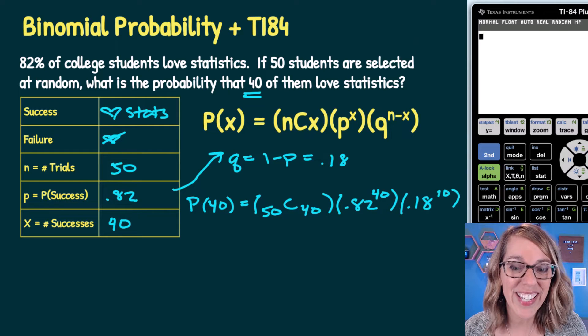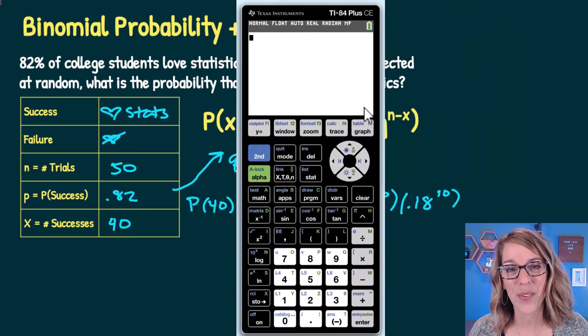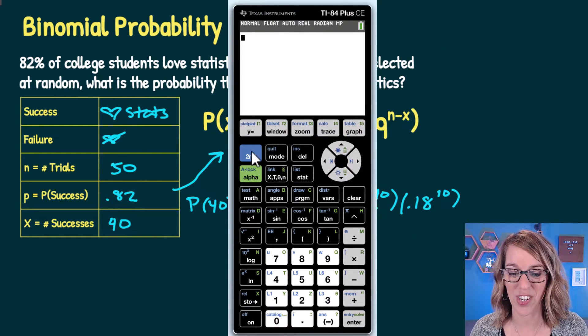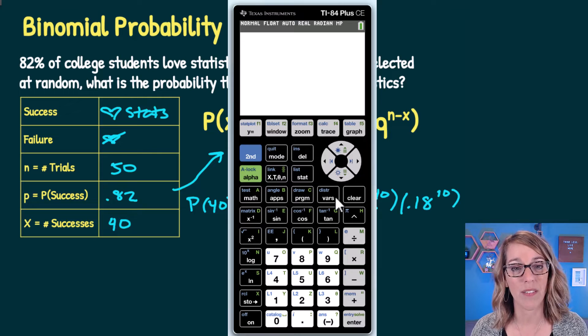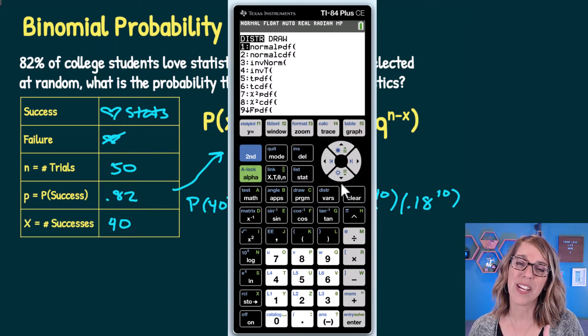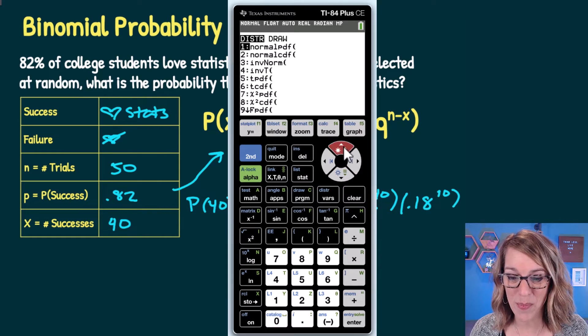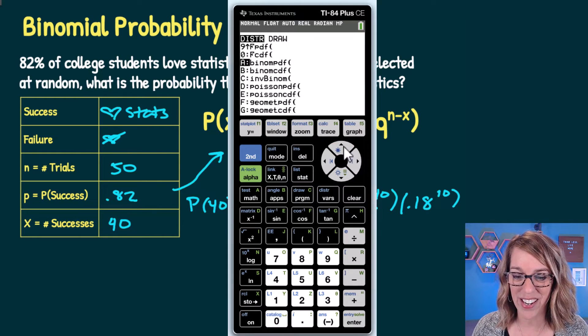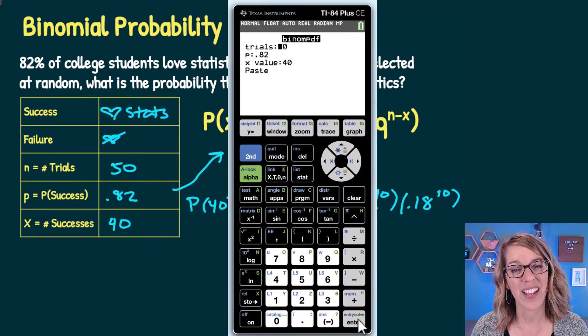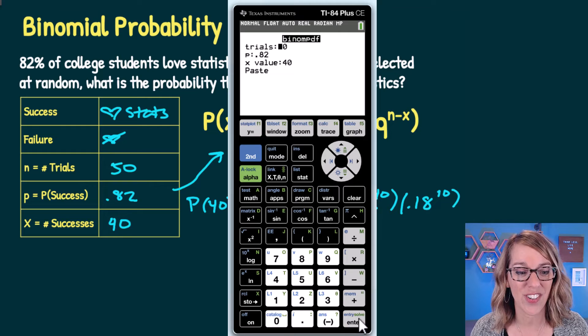Let's put this into the calculator. We're going to go to the distribution menu. I press 2nd followed by VARS to get distribution. It's towards the bottom of the list, so I arrow up to find binomial PDF. Once I find it,